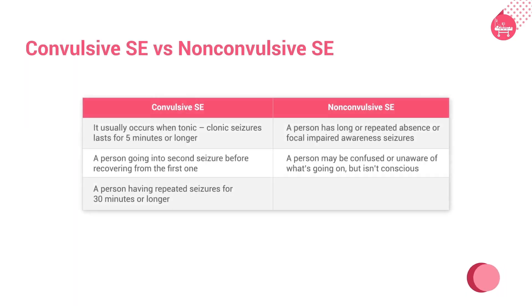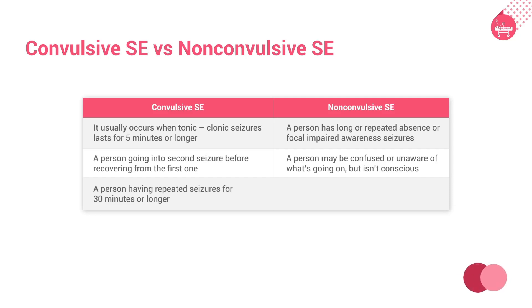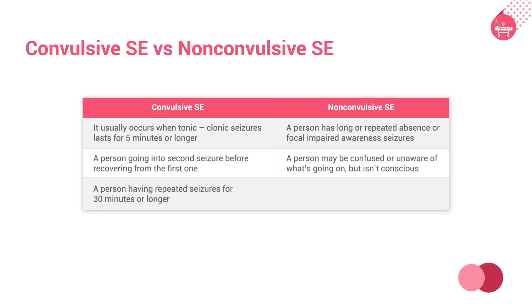Convulsive SE is the more common type of SE. It generally occurs when a person has prolonged or repeated tonic-clonic seizures — specifically when seizures last five minutes or longer, when a person goes into a second seizure before recovering from the first, or when repeated seizures occur for 30 minutes or longer. It causes sudden unconsciousness, muscle stiffening, rapid jerking of the arms or legs, loss of bladder control, and tongue biting.